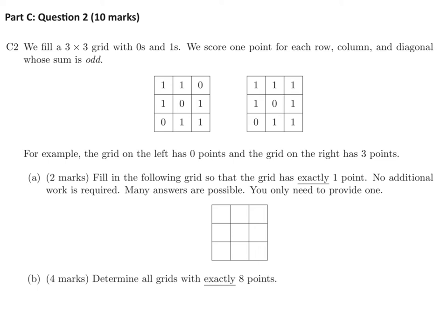We fill a 3x3 grid with zeros and ones. We score one point for each row, column, and diagonal whose sum is odd. For example, the grid on the left has zero points and the grid on the right has three points. Fill in the following grid so that it has exactly one point. Many answers are possible; you only need to provide one. The only way you can get a point is if any of the sums are odd.